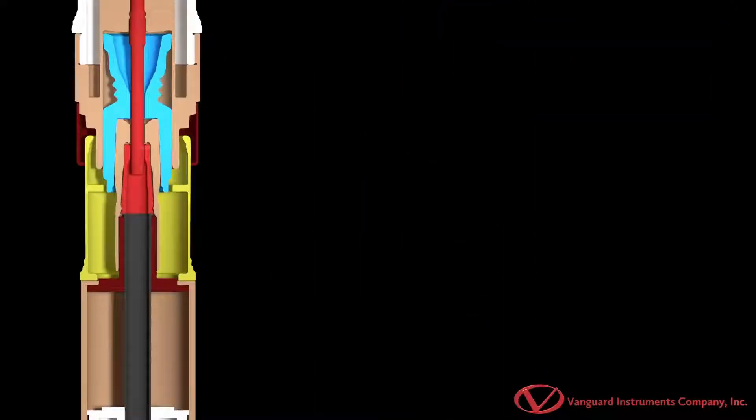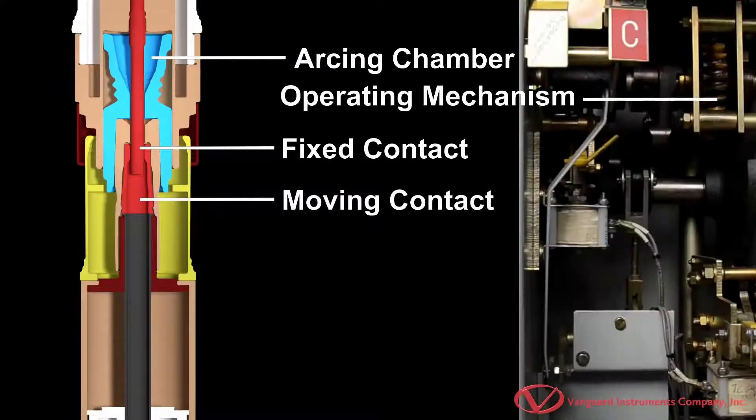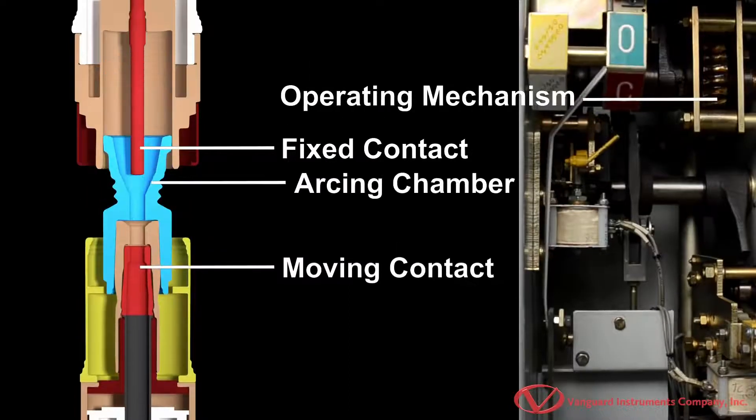Circuit breakers feature fixed and moving contacts that are housed in an arcing chamber and are opened or closed by an operating mechanism. The breaker's operating mechanism controls the moving contact to quickly open or close the circuit.